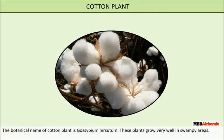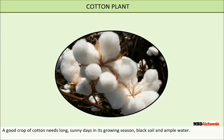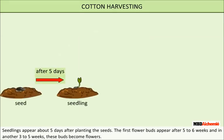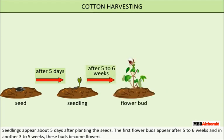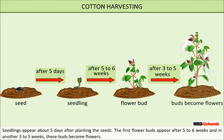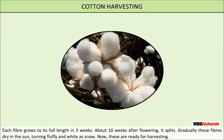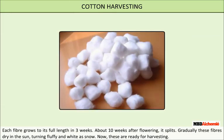Cotton plant: the botanical name of the cotton plant is Gossypium hirsutum. These plants grow well in swampy areas and need a long sunny growing season, black soil, and ample water. Seedlings appear about five days after planting. The first flower buds appear after five to six weeks, and in another three to five weeks these buds become flowers. Each fiber grows to its full length in three weeks, then about ten weeks after flowering it splits gradually. The fibers dry in the sun, turning fluffy and white, and are then ready for harvesting.